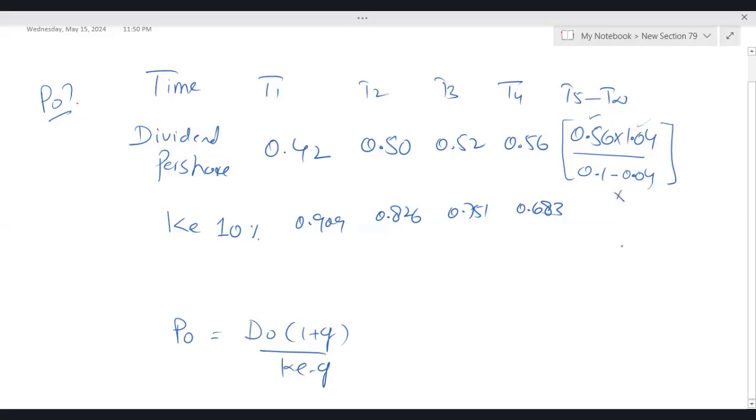Very important point: since you need to calculate present value from T5 till T infinity, whatever amount comes, just multiply that with the discount factor of the base year. Base year means previous year, which is 0.683. By using that formula, whatever answer comes, you have to multiply with the discount factor from the base year, which is the previous year.